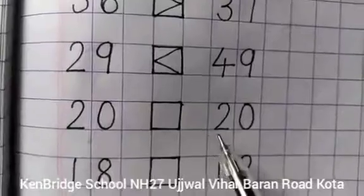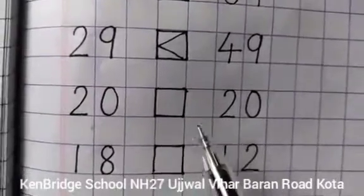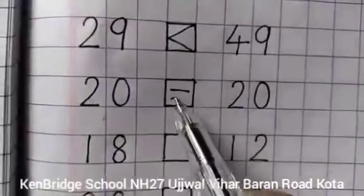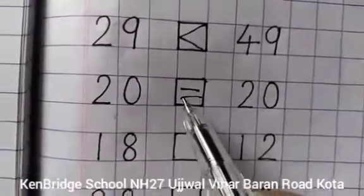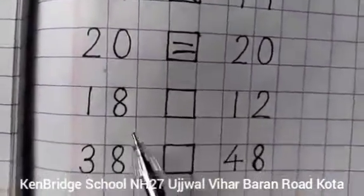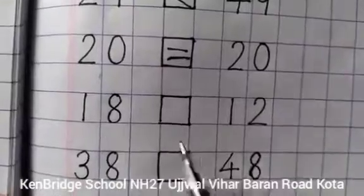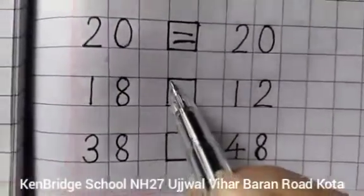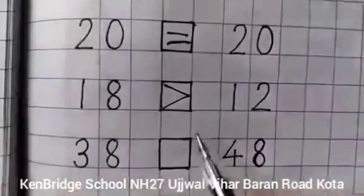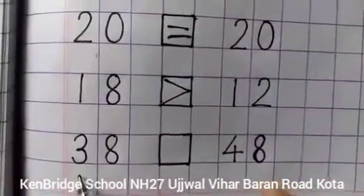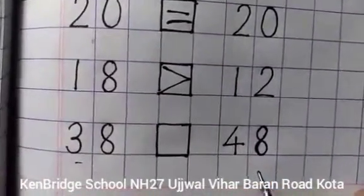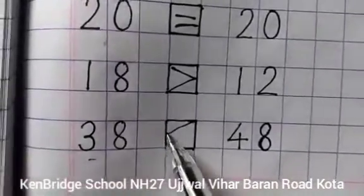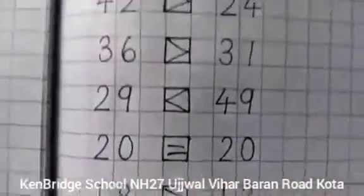Now again, both the numbers are equal. We will put equal sign here, like this. Number eighteen and number twelve — bigger number is number eighteen. Thirty-eight and forty-eight — bigger number is number forty-eight.